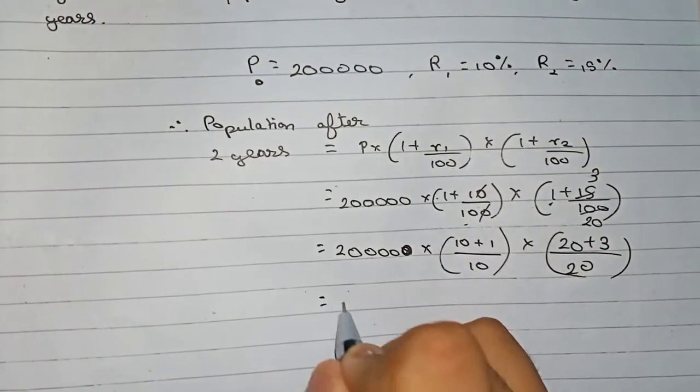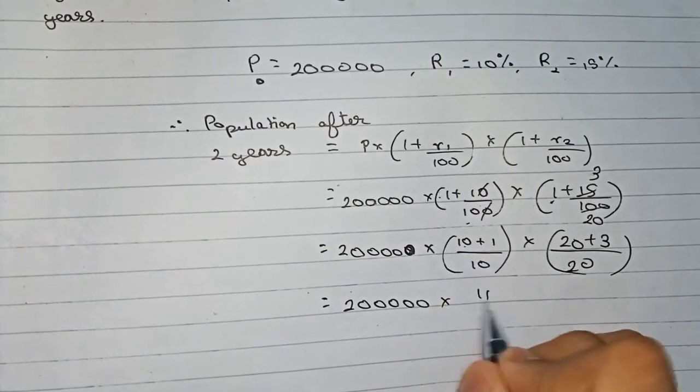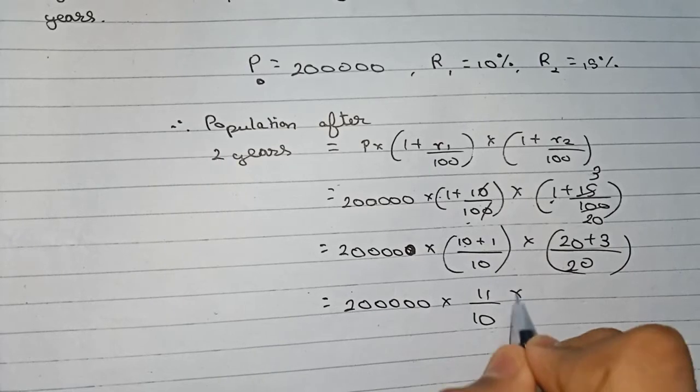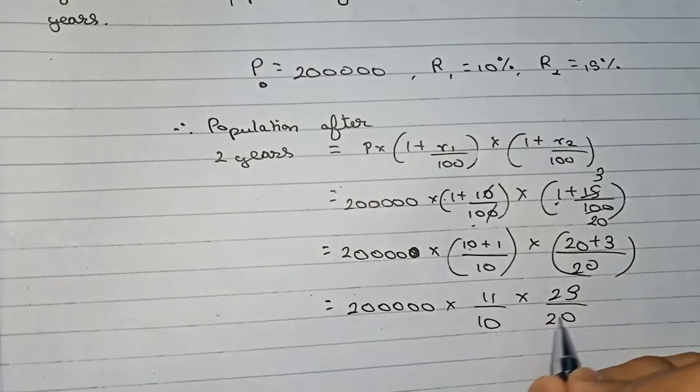So it will be 2 lakh into 10 plus 1, 11 by 10, into 20 plus 3, that is 23 by 20. So we cut the zeros.